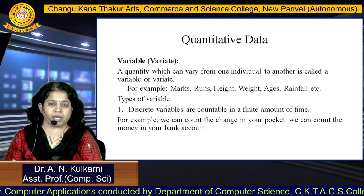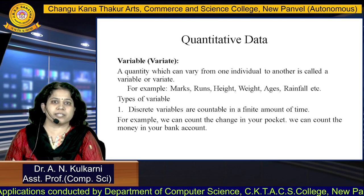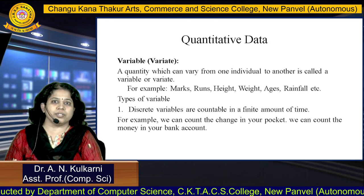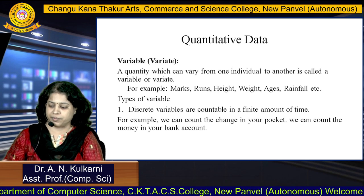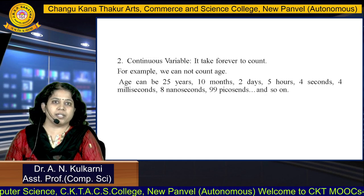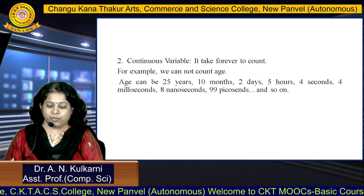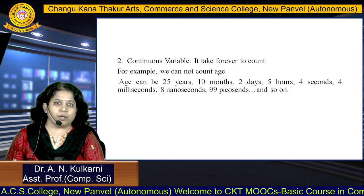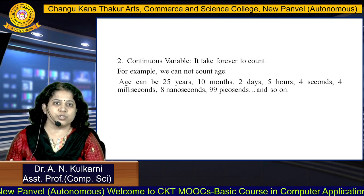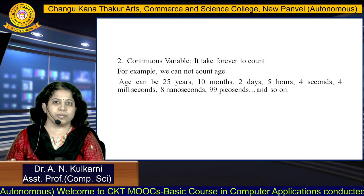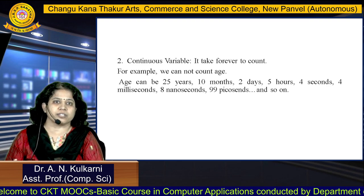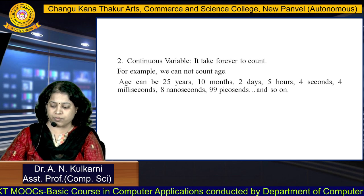Discrete variables are countable in a finite amount of time. For example, we can count the change in your pocket or the money in your bank account — this is discrete. Continuous variable takes forever to count. For example, we cannot count age, because age can be 25 years, 10 months, 2 days, 5 hours, 4 seconds, 4 milliseconds, 8 nanoseconds, and 99 picoseconds and so on. So age comes under continuous variable.